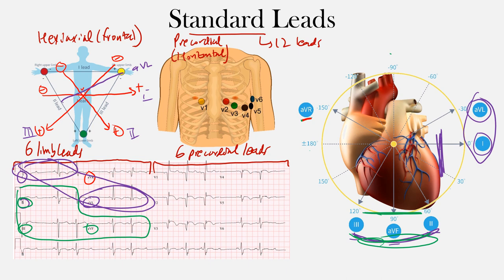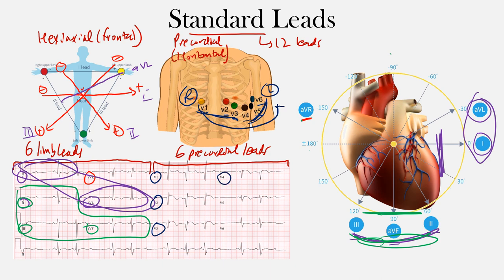Now let's look at the precordial or horizontal plane, where you have six precordial leads positioned across the chest: V1, V2, V3, V4, V5, and V6. They go from the right side all the way to the left side of the body. When we think of the right precordial leads, we think of V1 up until V3, but often V1 and V2. The left lateral precordial leads would be V4 through V6, mostly V5 and V6. So you go from V1, V2, V3, V4, V5, and V6 — from rightward all the way to the left side.